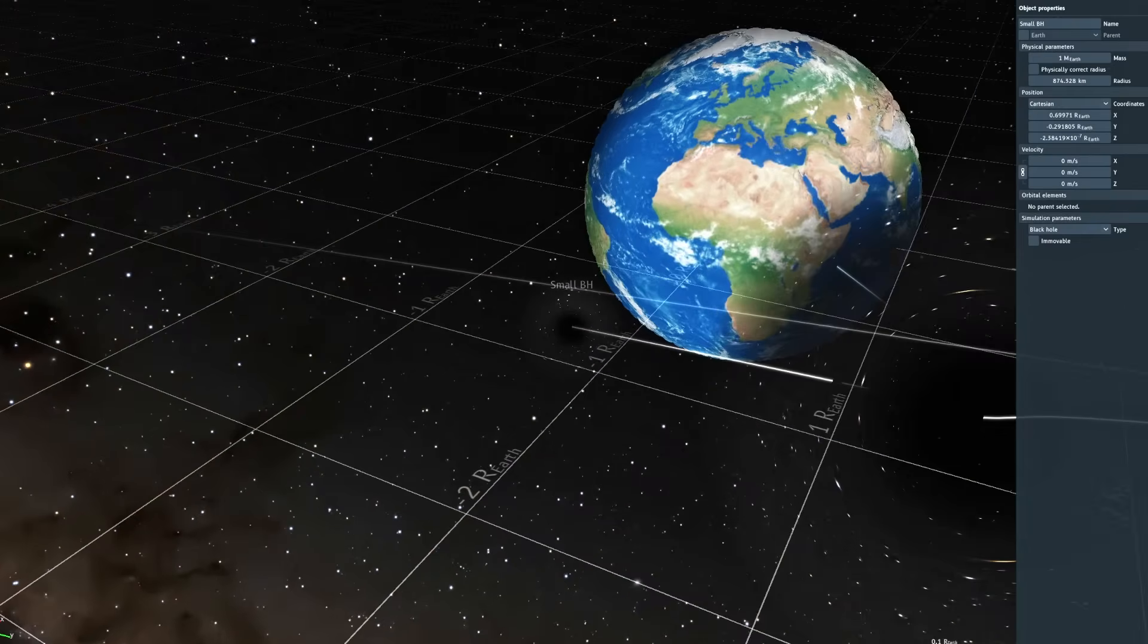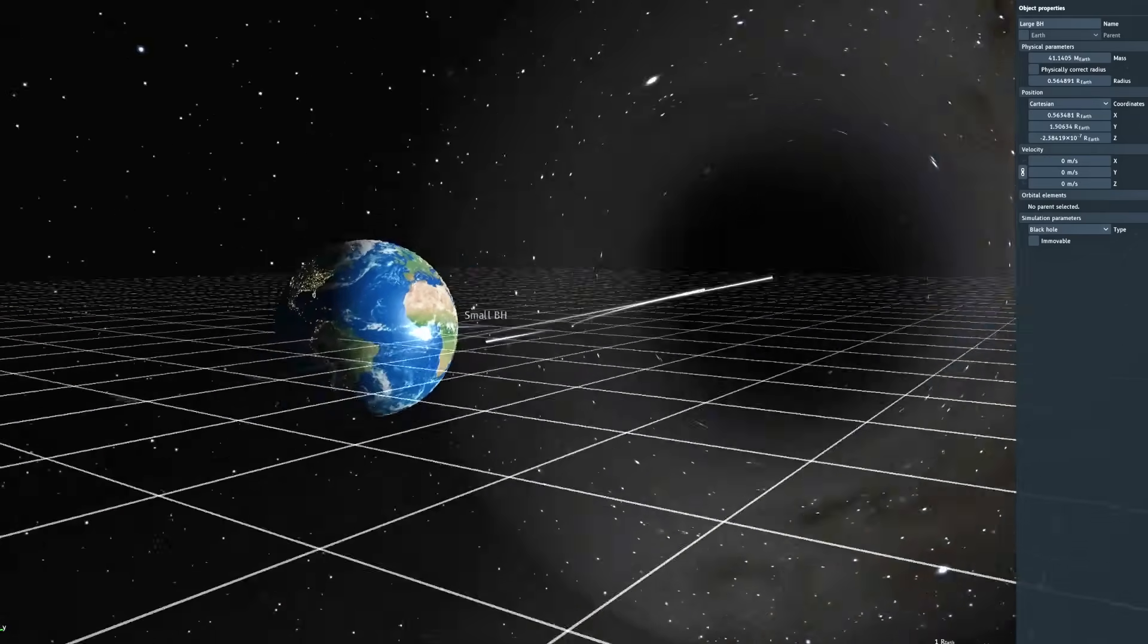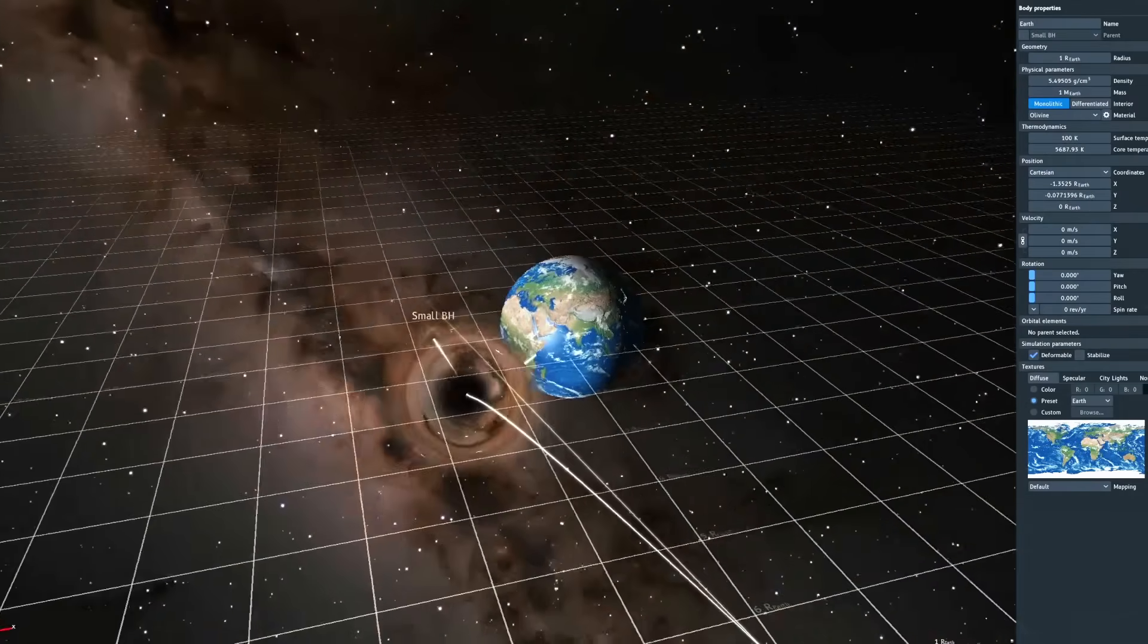Let's see what happens when a small black hole, a large black hole, and stay for the end because a supermassive black hole does to the earth.